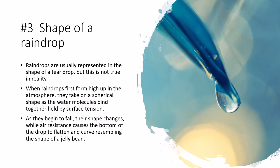Raindrops are usually represented in the shape of a teardrop, but this is not true in reality. When raindrops first form high up in the atmosphere, they take on a spherical shape as the water molecules bind together, held by surface tension. As they begin to fall, their shape changes, as air resistance causes the bottom of the drop to flatten and curve, resembling the shape of a jelly bean.